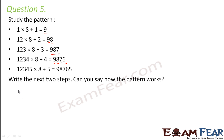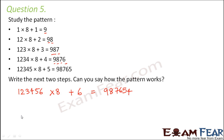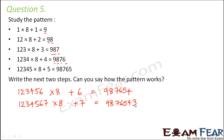Can we write the next two steps? Yes, we can. The next step would be: 123456 × 8 + 6 = 987654. And the step after that: 1234567 × 8 + 7 = 9876543. That is the pattern we can see.